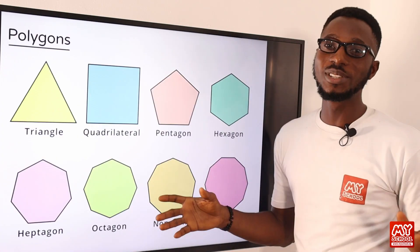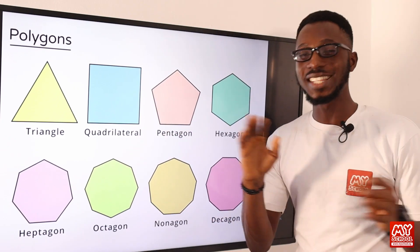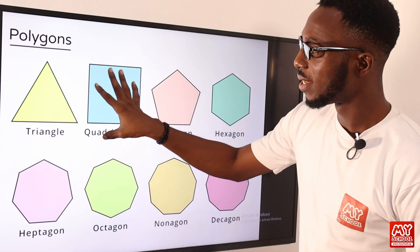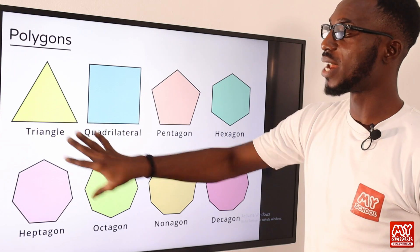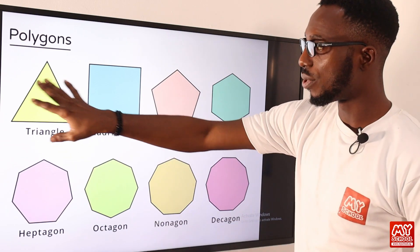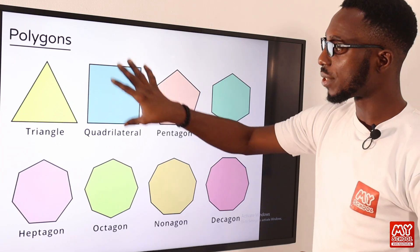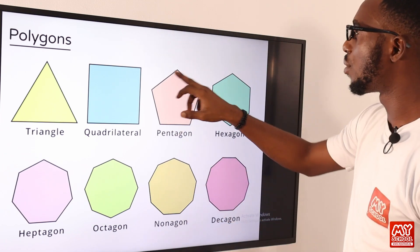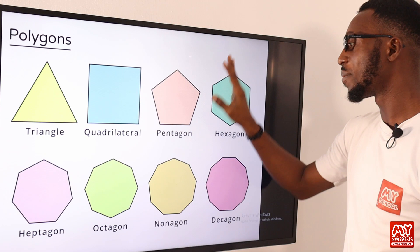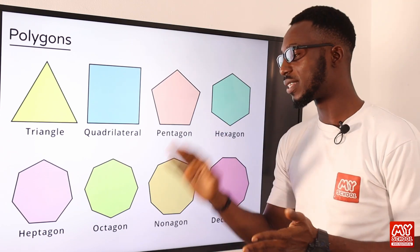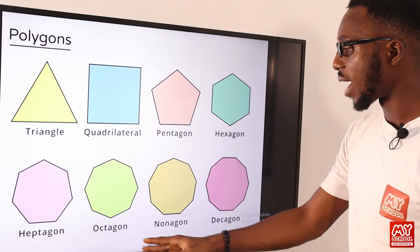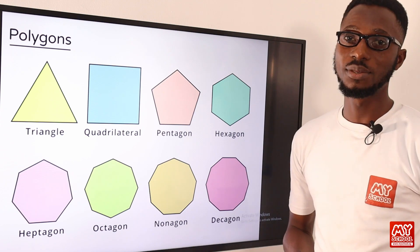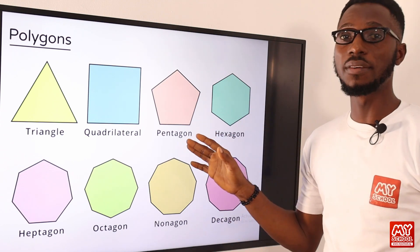We can classify polygons by the number of sides. Depending on the number of sides: triangle has three sides, quadrilateral has four sides, pentagon has five sides, hexagon has six, heptagon has seven, octagon has eight, nonagon has nine, decagon has ten, and we have eleven, twelve, and so on. You can actually describe a polygon based on the number of sides.